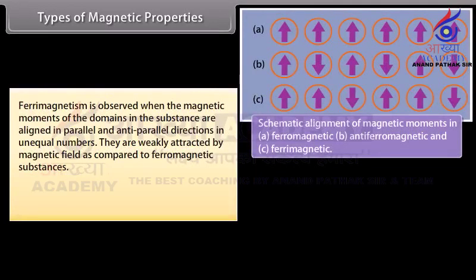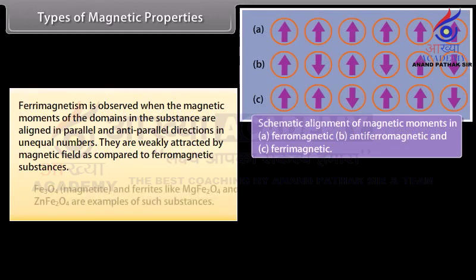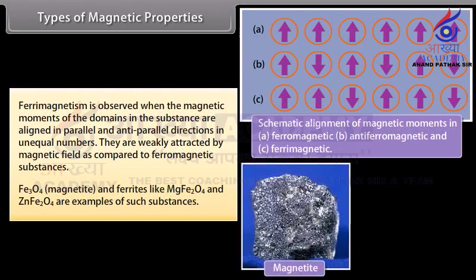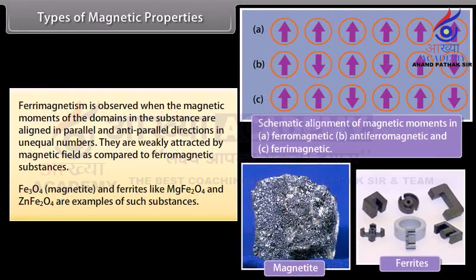Ferrimagnetism is observed when the magnetic moments of the domains in the substance are aligned in parallel and anti-parallel directions in unequal numbers. These substances are weakly attracted by a magnetic field compared to ferromagnetic substances. Fe₃O₄ (magnetite) and ferrites like MgFe₂O₄ and ZnFe₂O₄ are examples of such substances.